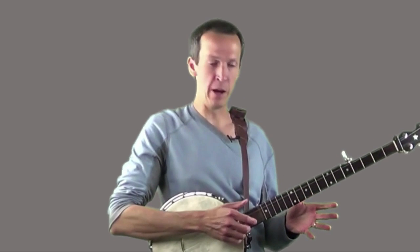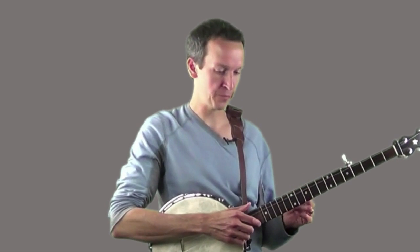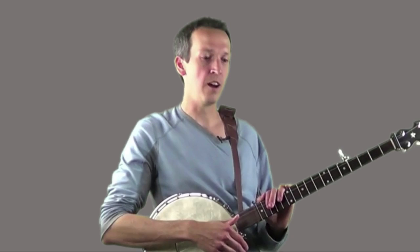So go ahead and practice a bit trying to strike each of the individual strings with your picking hand using the hammer motion. Don't forget about the thumb rest, so make sure to keep the flesh of your thumb pressed up against the fifth string at the end of the stroke. And do that for a little bit. Once you feel a little comfortable with it, we're going to break out the metronome for a few more exercises.